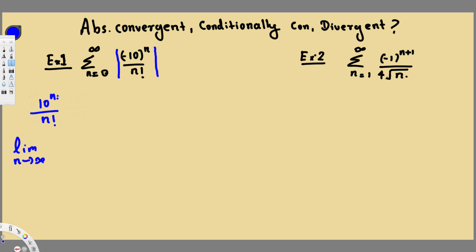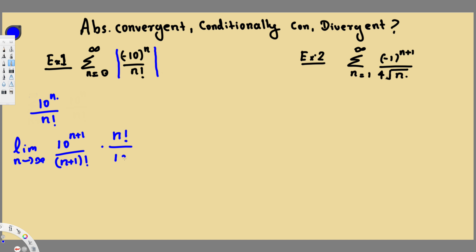What the ratio test is: we take the limit as n approaches infinity, and we add one more to the n value. So here we have 10 power n, and wherever we have n we just add one, giving us 10 power (n+1) over (n+1) factorial. Then we divide by the original function — 10 power n over n factorial — which is the same as multiplying by n factorial over 10 power n.